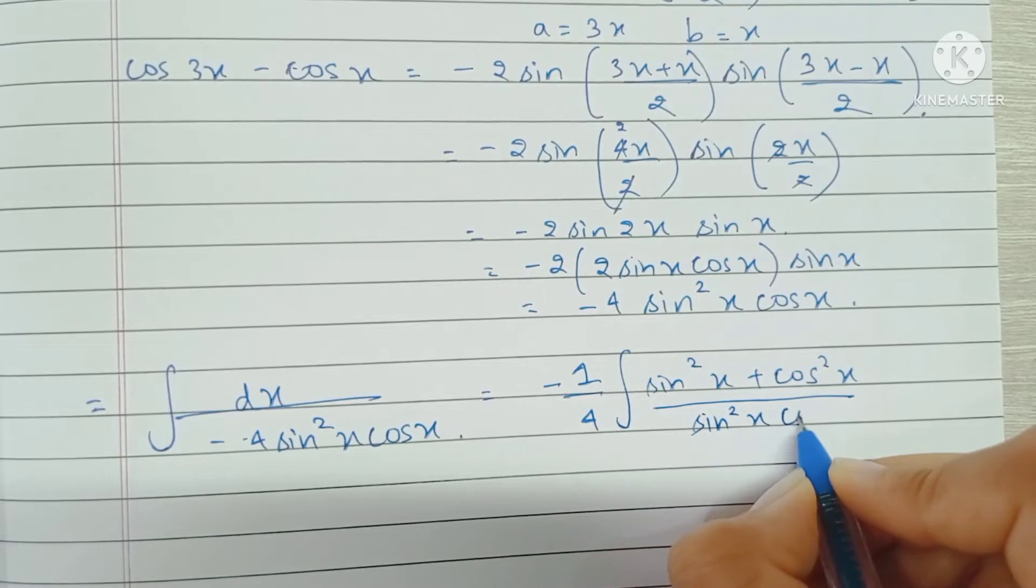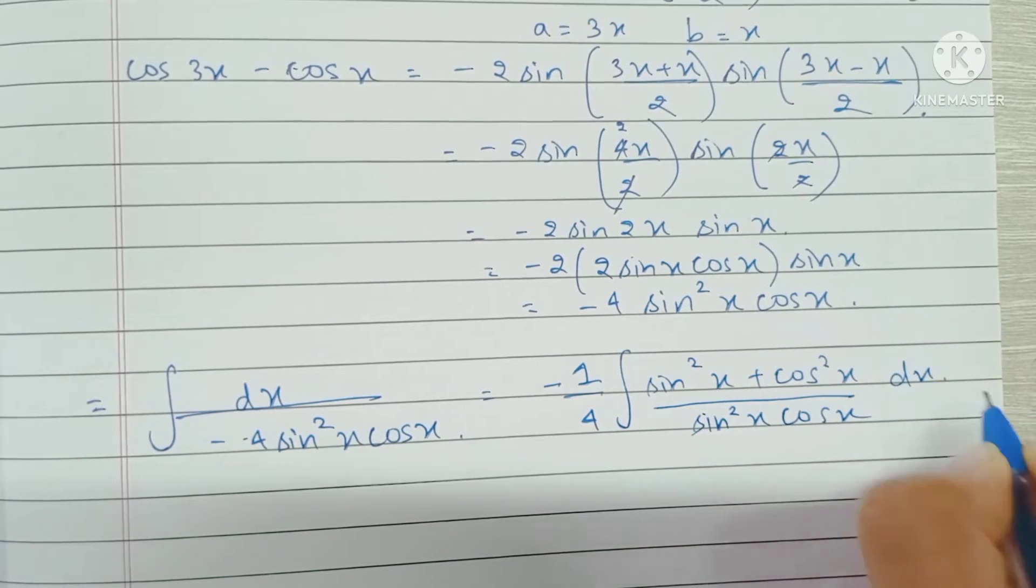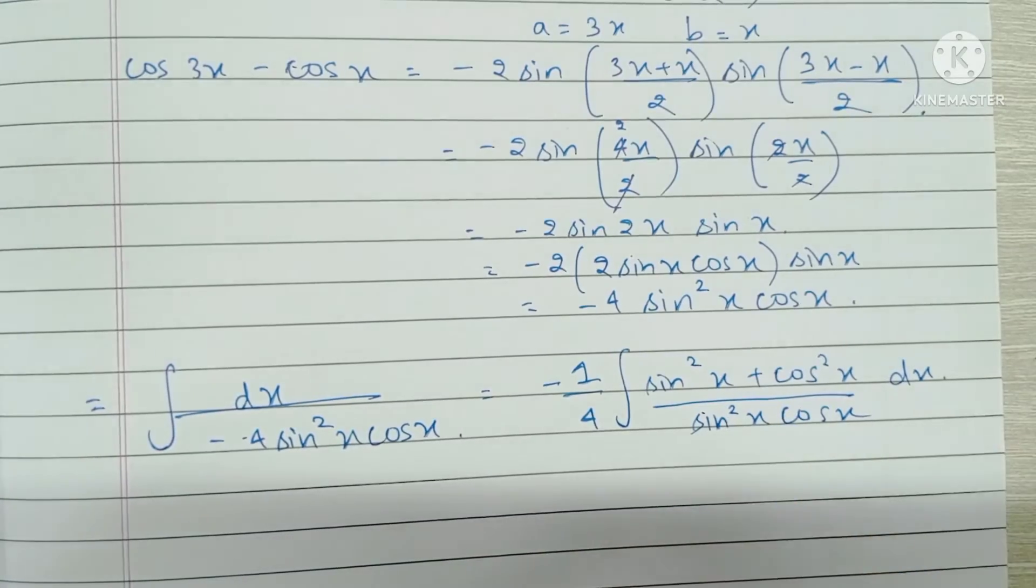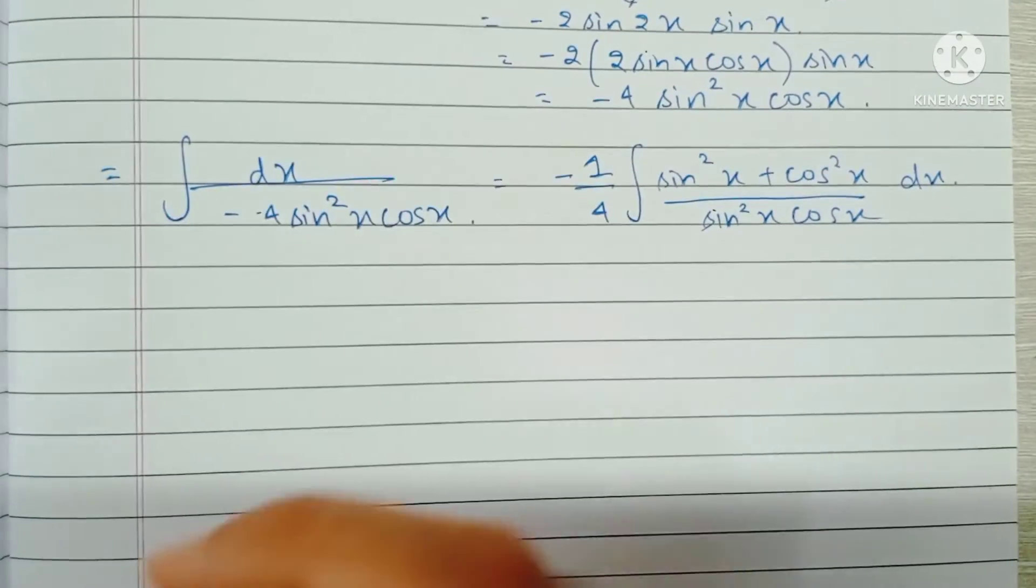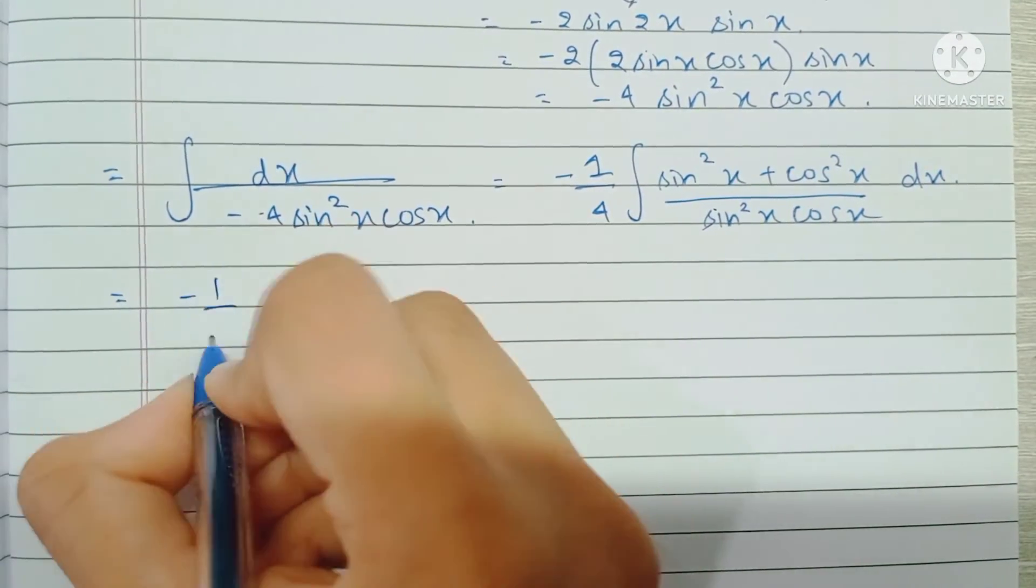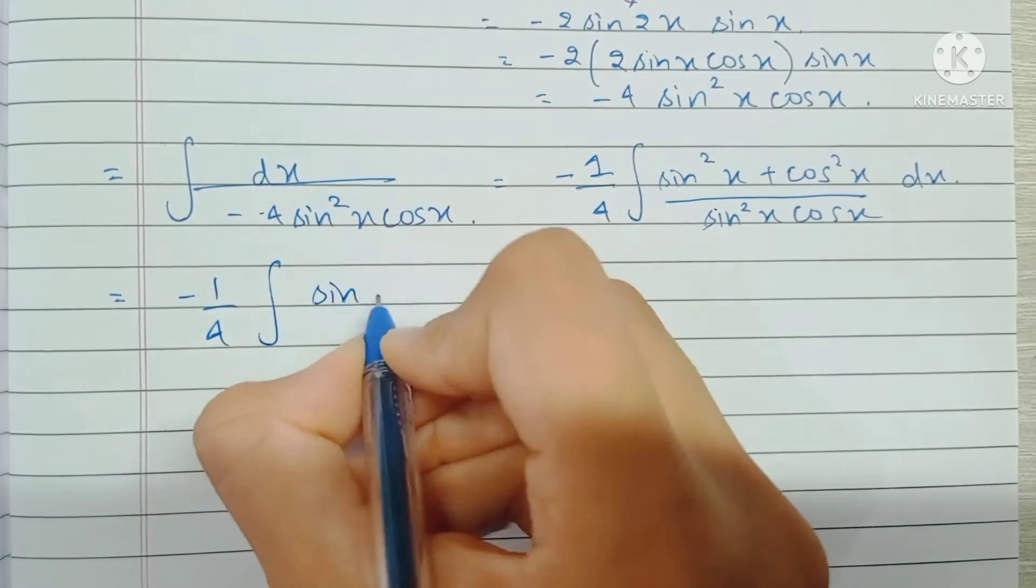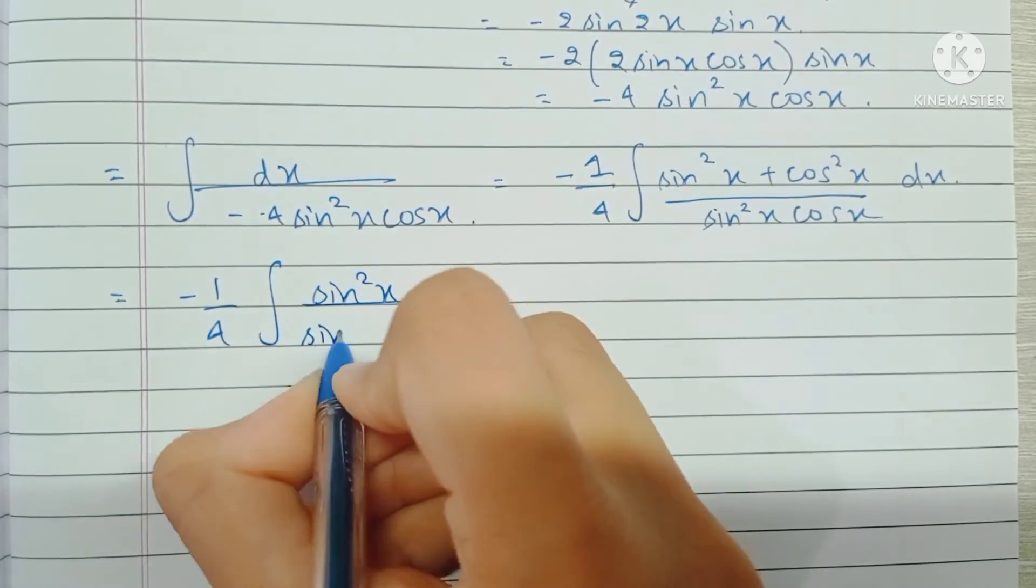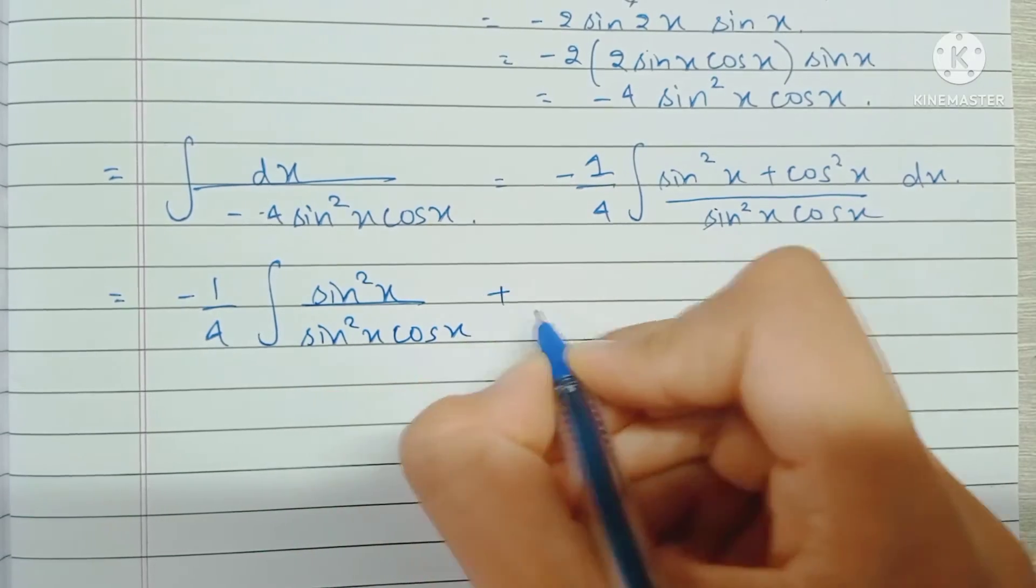Now I'm going to write this as two separate integrals or two separate fractions. So we have sine squared x upon sine squared x cos x, and we have plus cos squared x upon sine squared x cos x.